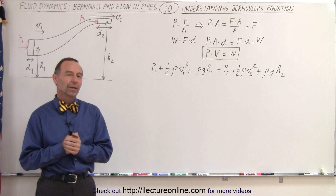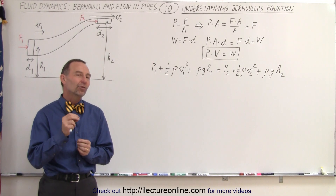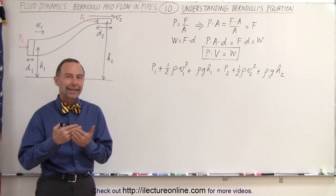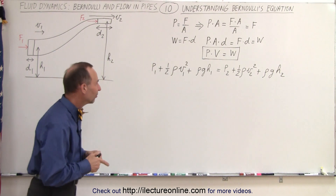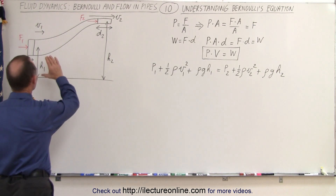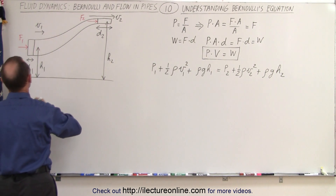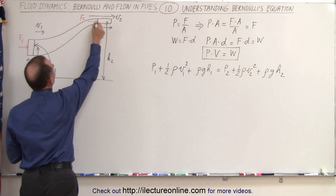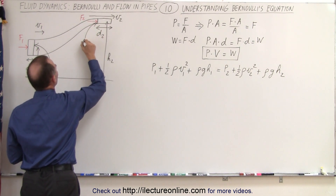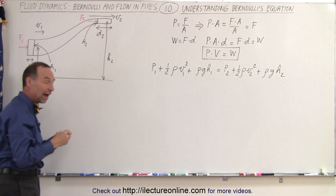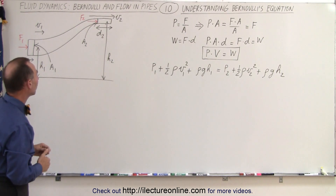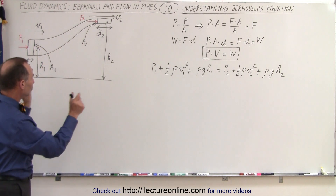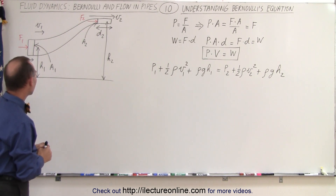Welcome to our lecture online. The key concept of Bernoulli's equation is that it actually represents work and energy. Here we have a pipe that starts at a greater cross-sectional area, A1, and cross-sectional area A2, which is at a higher elevation — H2 is bigger than H1. So we have a difference in velocity and a difference in forces pushing the fluid through the pipe.